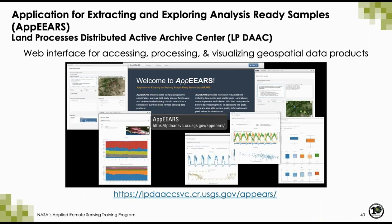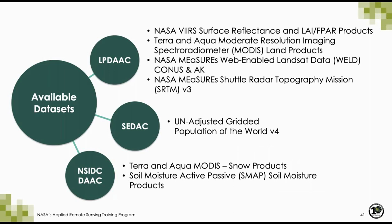The LP DAAC has developed Application for Extracting and Exploring Analysis-Ready Samples, or APPEARS — a web interface for accessing, processing, and visualizing geospatial data products. The data in APPEARS come from the LP DAAC, the Socioeconomic DAC (SEDAC), and the National Snow and Ice Data Center (NSIDC). Currently available data include NASA VIIRS surface reflectance and LAI/FPAR products, MODIS Aqua, Terra, and combined land products for all tiled Level 3 and 4 data, web-enabled Landsat data for the conterminous United States and Alaska, and NASA's Shuttle Radar Topography Mission (SRTM) version 3.